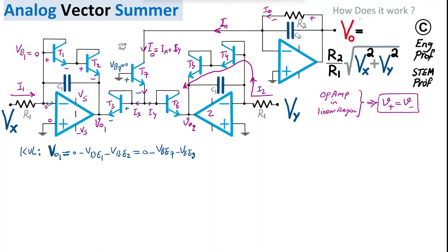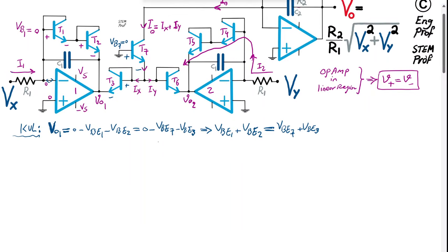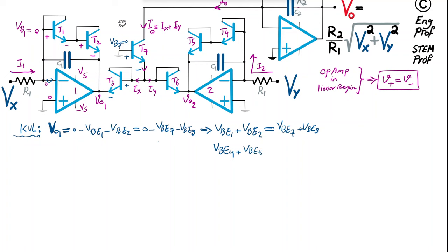Applying the same KVL analysis to the second loop yields a second important equation: VBE4 + VBE5 = VBE7 + VBE6. These two voltage-sum equations are what we need to proceed with the analysis.